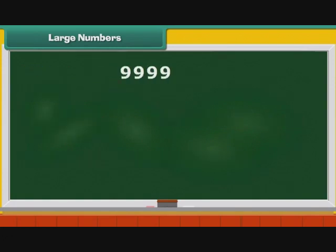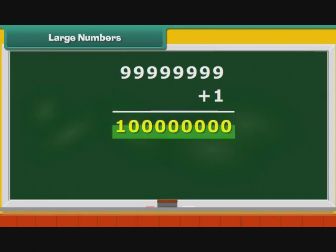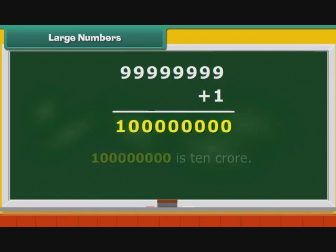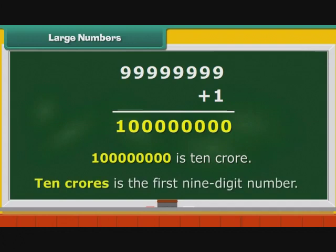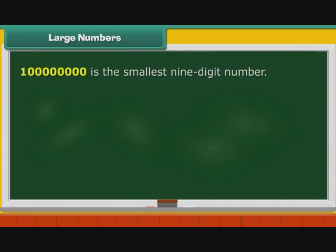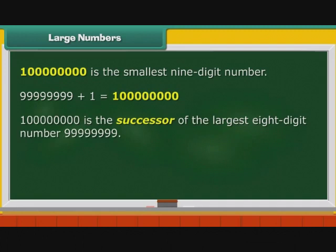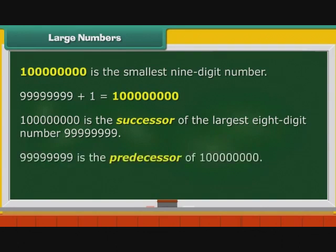The largest eight-digit number has eight nines in it. Add one to it. What do you get? One followed by eight zeros. This number is known as ten crores. Ten crores is the smallest nine-digit number. It is one more than the largest eight-digit number. Therefore, ten crores is the successor of the largest eight-digit number. In other words, the largest eight-digit number is the predecessor of the smallest nine-digit number.